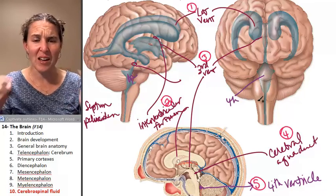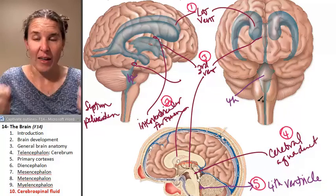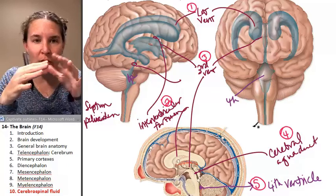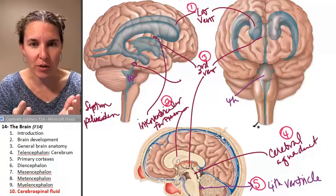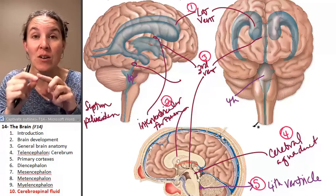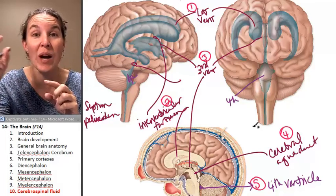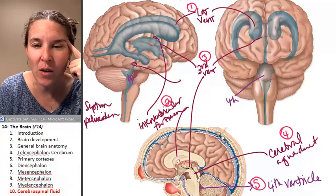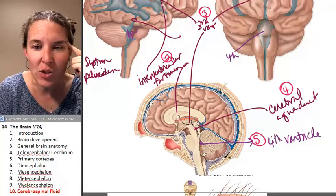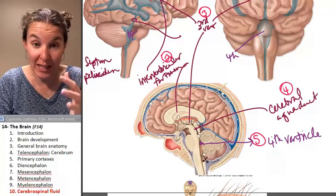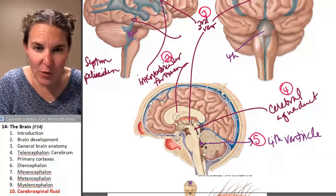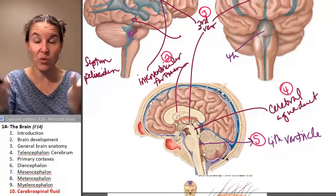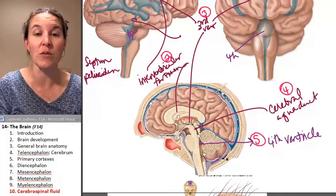There's a little hole in the wall around the fourth ventricle, and that hole allows cerebrospinal fluid to drain out of it. It drains out of that hole and into the area surrounding the brain itself.